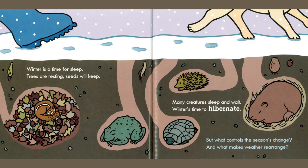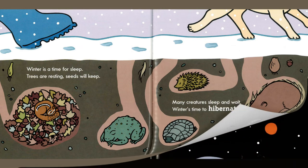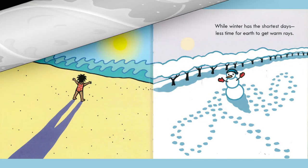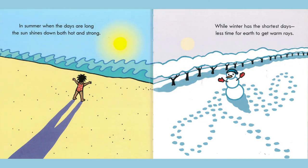Many creatures sleep and wait — winter's time to hibernate. But what controls the seasons' change, and what makes weather rearrange? Earth's yearly trip around the sun affects the seasons one by one. In summer when the days are long, the sun shines down both hot and strong.